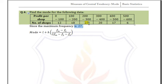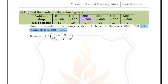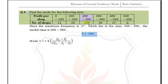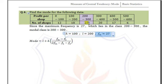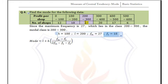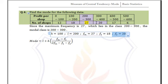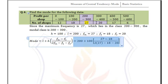The corresponding class is 200 to 300, so the modal class is 200 to 300. Here h is 100, L (lower limit of the modal class) is 200, fm (maximum frequency) is 27, and f1 is the preceding frequency. Substituting all values into the formula and simplifying, the mode is equal to 256.25.